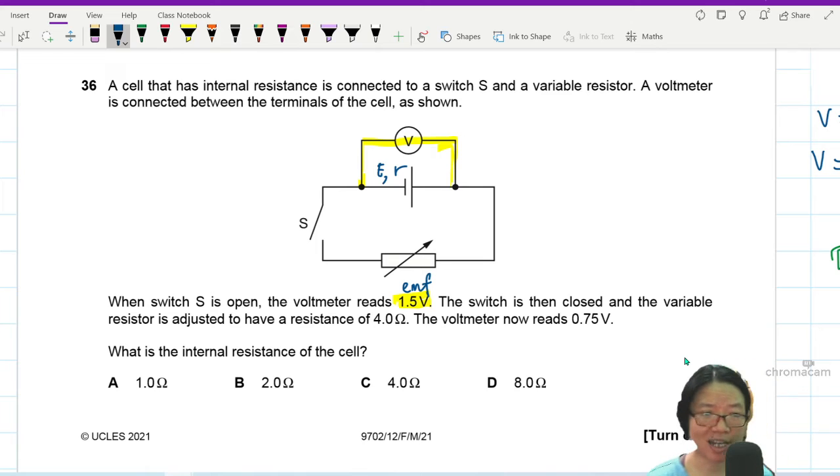The switch is then closed. Okay, so we're going to close this now. And the variable resistor is adjusted to have a resistance of 4 ohm. Okay, this is 4 ohm. The voltmeter reading now reads 0.75 volt.